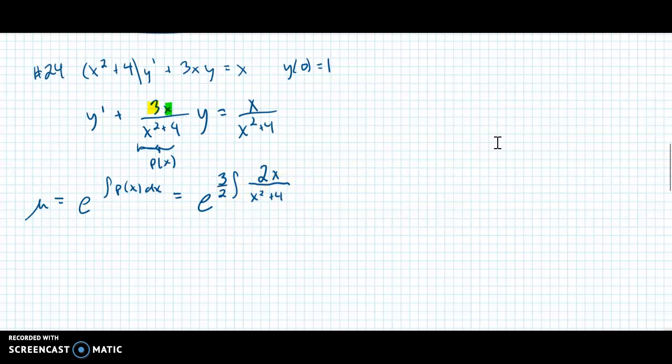We did a lot of that when we did some arctans, but you could also use u sub to do this as well. But when I'm doing it all in one line and a lot of other steps all at once, if I have little tricks like that, I'll do it. So that gives me e to the 3 halves. And then I get ln of x squared plus 4.